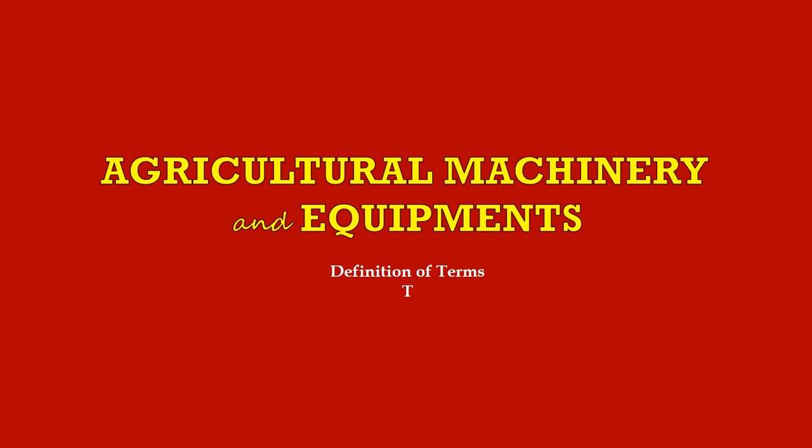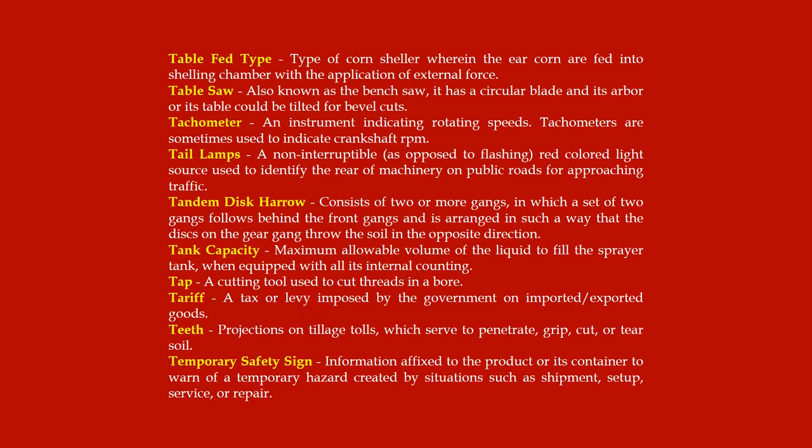Hello and welcome back again, Coffee Beans. This is Agricultural Machinery and Equipment definitions of terms. Table fed type: a type of corn sheller wherein the ear corn are fed into the shelling chamber with the application of external force. Table saw, also known as the bench saw, has a circular blade and its arbor or table could be tilted for bevel cuts. Tachometer: an instrument indicating rotating speeds; tachometers are sometimes used to indicate crankshaft RPM.